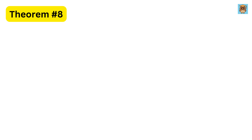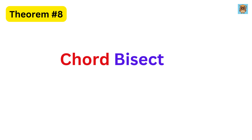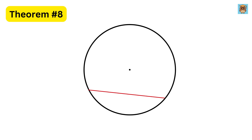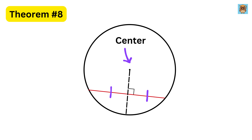Theorem eight: chord bisector theorem. This means that if we draw a line that is both perpendicular to a chord and divides it into two equal parts, then that line must pass through the center of the circle.